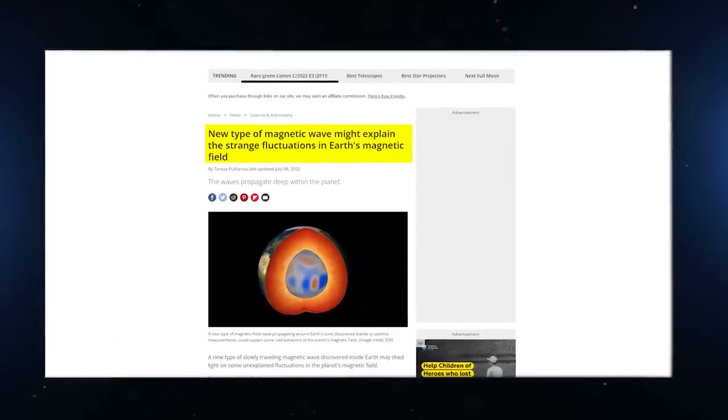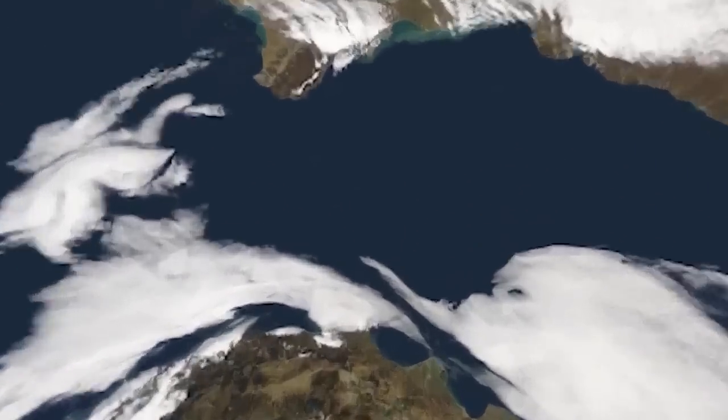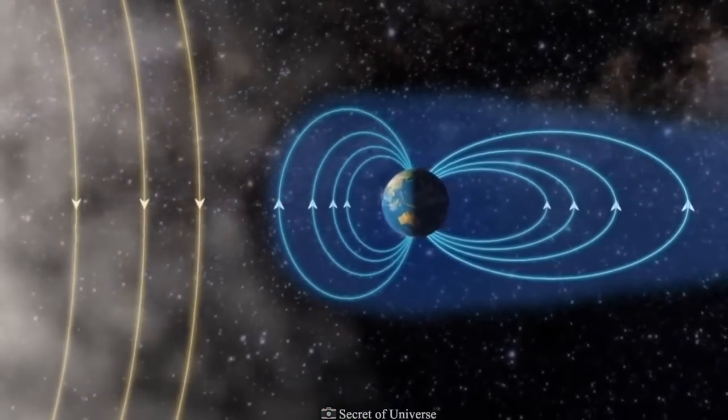It likes that its life is always changing, and a weak spot over the southern Atlantic Ocean has been getting weaker recently, which could mean that a global magnetic reversal event is starting.